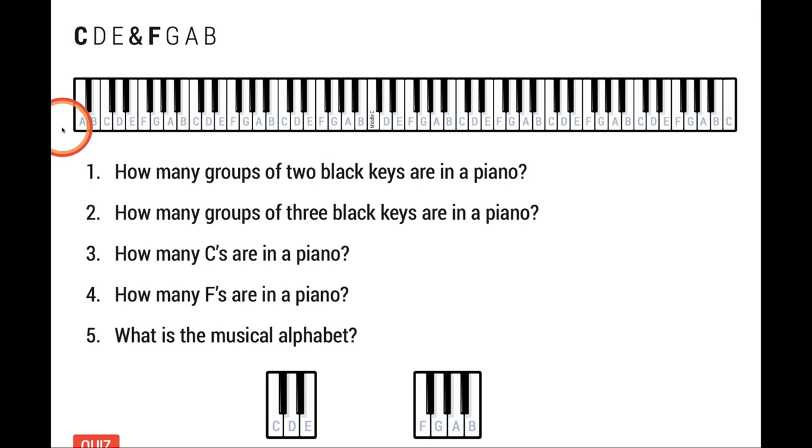Now, we name the first white key A. And the next one, B, C, D, E, and F, G, to return back to A again. So piano keys are A, B, C, D, E, F, G. And back to A again. B, C, D, E, F, G. It just keeps going on.